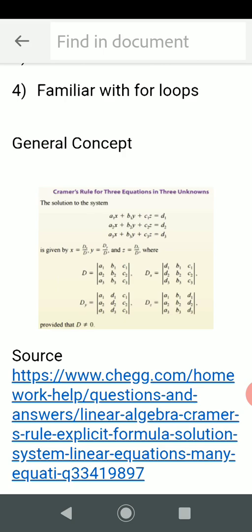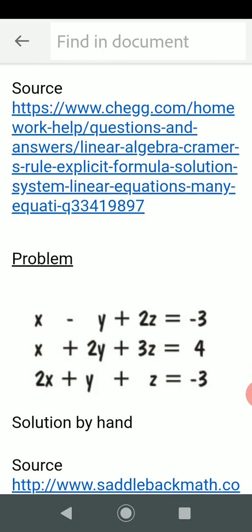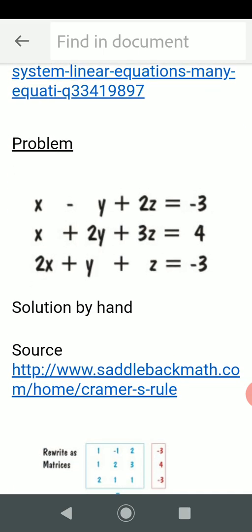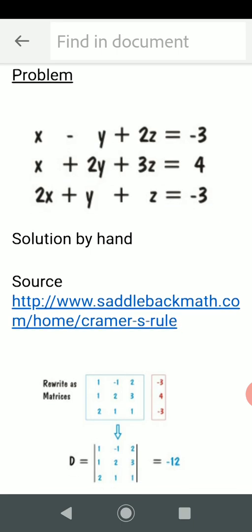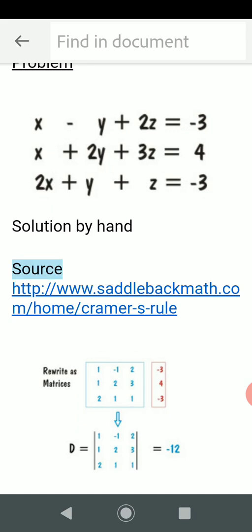So there's a problem and I took that problem from saddlebackmath.com. We have there x minus y plus 2z equals -3,